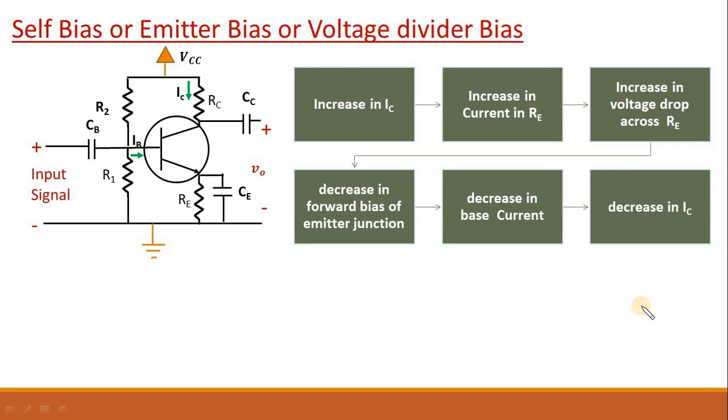So this circuit is self-stabilizing itself. Increase in IC will lead to this cascading effect and automatically IC will decrease. Therefore this circuit is also known as self bias. Everything happening due to current passing through RE. That is the voltage drop across RE will get feedback and this RE is emitter resistance. That is why it is also known as emitter bias.